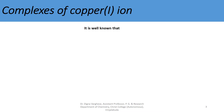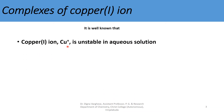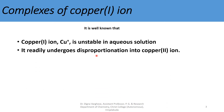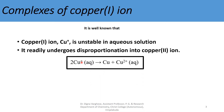This is the case of copper(I) ion. It is well known that copper(I) ion is unstable in aqueous solution. It readily undergoes disproportionation into copper(II) ion, which is the most stable oxidation state of copper. Copper(I) is unstable — but how can we stabilize it? By forming complexes.